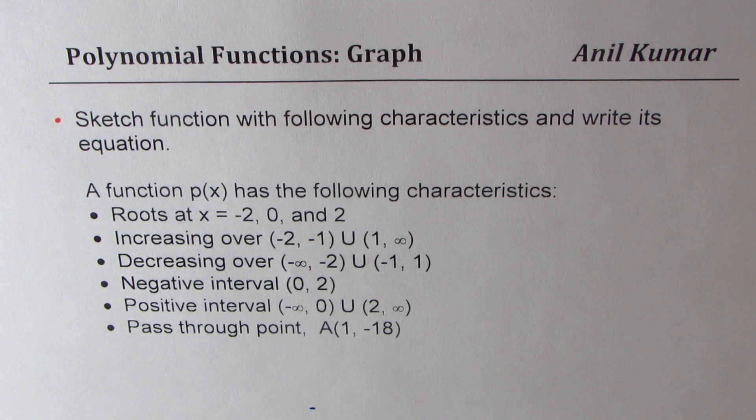Negative interval 0 to 2, positive interval from minus infinity to 0 union 2 to infinity, and the graph passes through the point A at (1, -18).